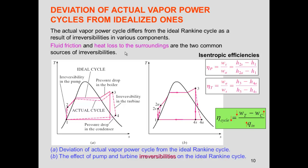The second deviation is heat loss to the surroundings, especially in the turbine. We no longer have an isentropic process — we have fluid friction and heat transfer to the surroundings, giving us a non-isentropic turbine. The same applies to the pump. To account for these irreversibilities, we define an isentropic efficiency for both the turbine and the pump.